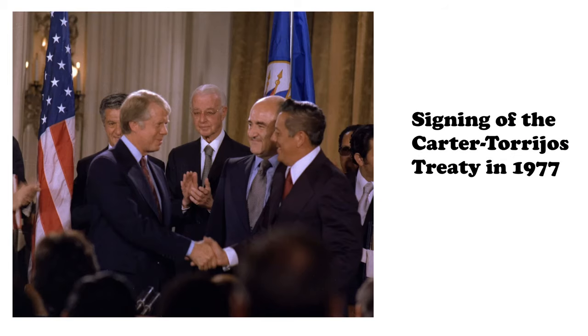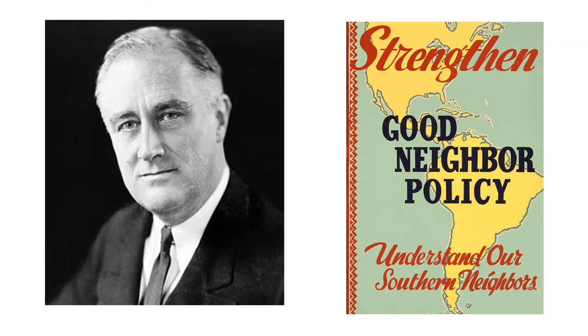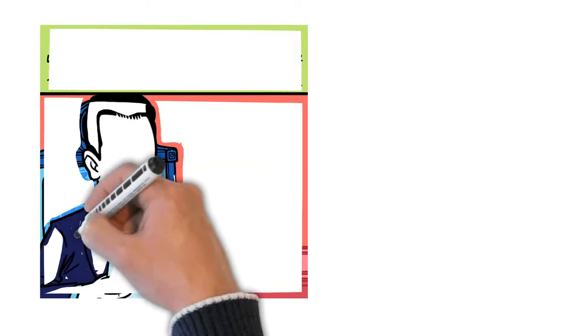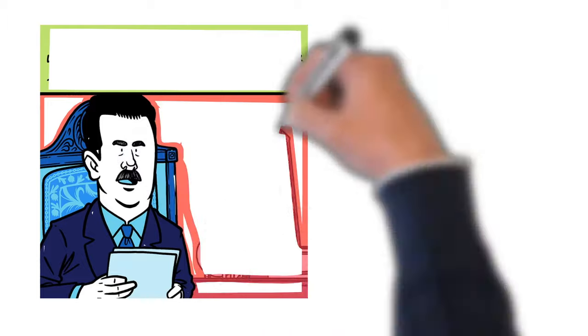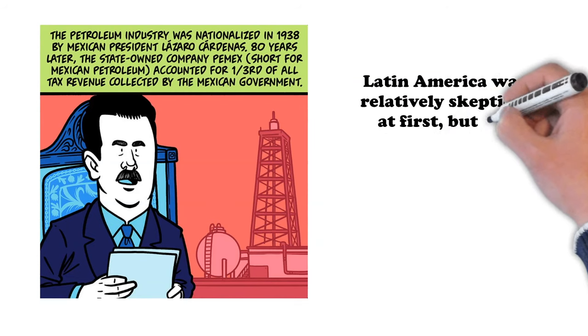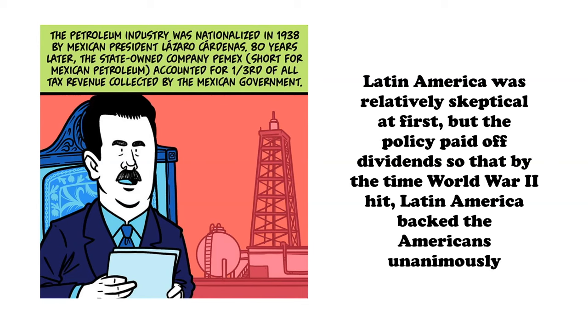This imperialistic period changed slowly after the late 1920s, and with the arrival of FDR to the presidency, an entire new era began — the time of the Good Neighbor Policy. This period was characterized by the principle of non-intervention as well as reciprocal exchanges between the U.S. and Latin America. FDR ended all occupations, got rid of the Platt Amendment — an article in the Cuban Constitution where the U.S. had given itself the right to intervene unilaterally — and even supported Mexico when it nationalized the oil industry and kicked out several American oil companies. Latin America was relatively skeptical at first, but the policy paid off dividends.